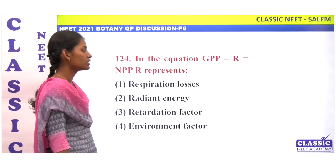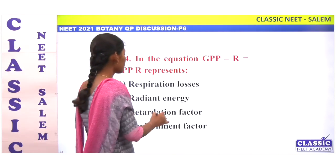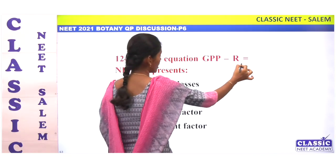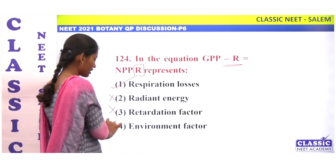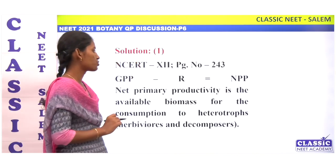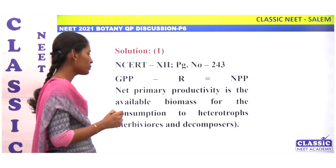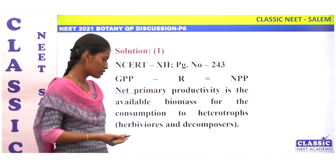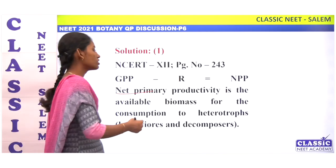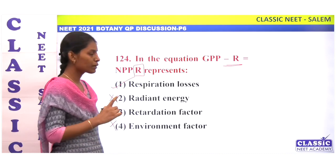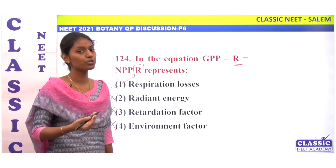In the equation GPP minus R equals NPP, what does R represent? R is nothing but respiratory loss. Net Primary Productivity equals GPP minus R. NPP is the biomass available to heterotrophs.